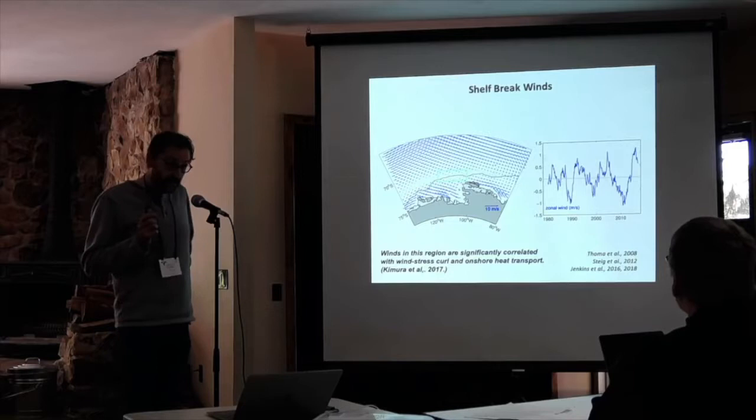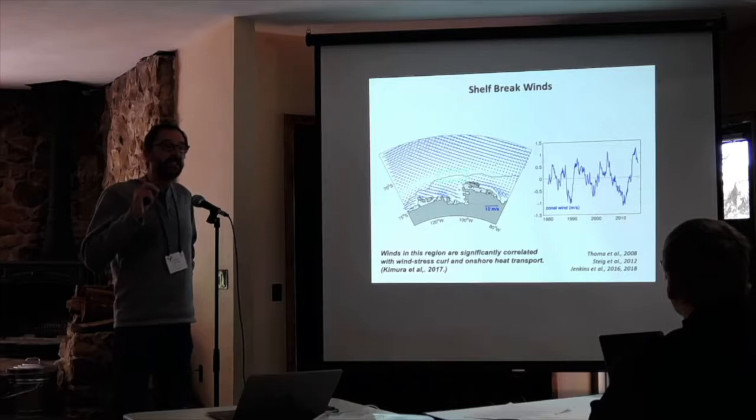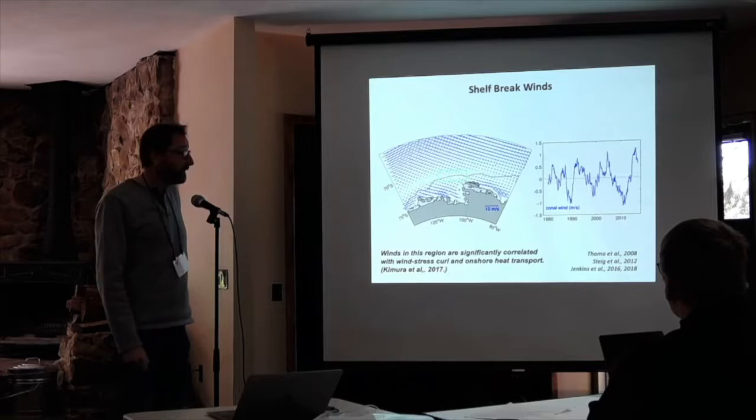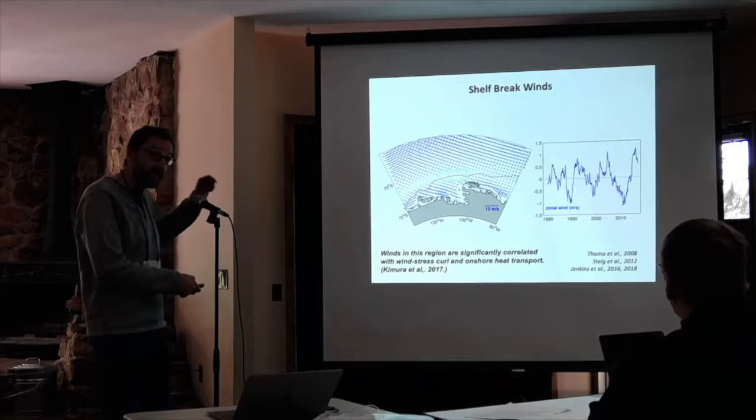I encourage you to read Adrian's 2018 paper, which looks at melt rates and notes the 2011 drop in melt rate, certainly associated with the same wind anomalies. Going back to the Thoma GRL paper in 2008, there's a little box which Thoma used as the location to look at the winds and ask how the winds in that box correlated in their ocean model with heat delivered to the ice shelf — in particular the intrusion of circumpolar deep water up onto the shelf.